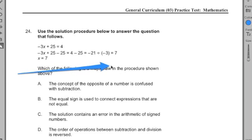Which of the following is a major flaw in the procedure shown above? So there's some mistake here. We've got to find it. A, the concept of the opposite of a number is confused with subtraction. B, the equal sign is used to connect expressions that are not equal. C, the solution contains an error in the arithmetic of signed numbers. D, the order of operations between subtraction and division is reversed.